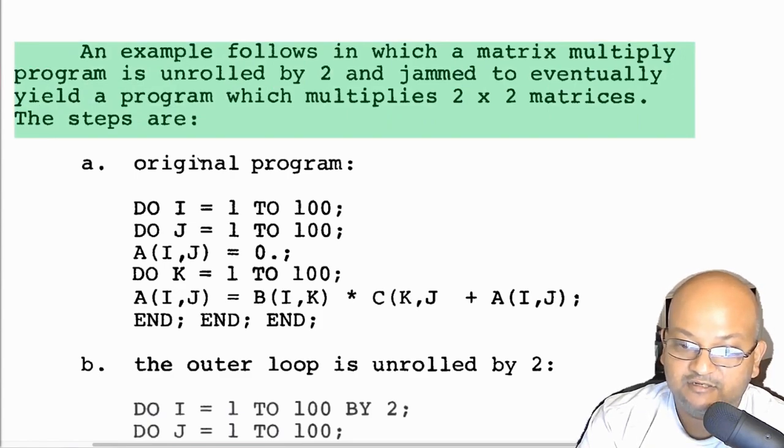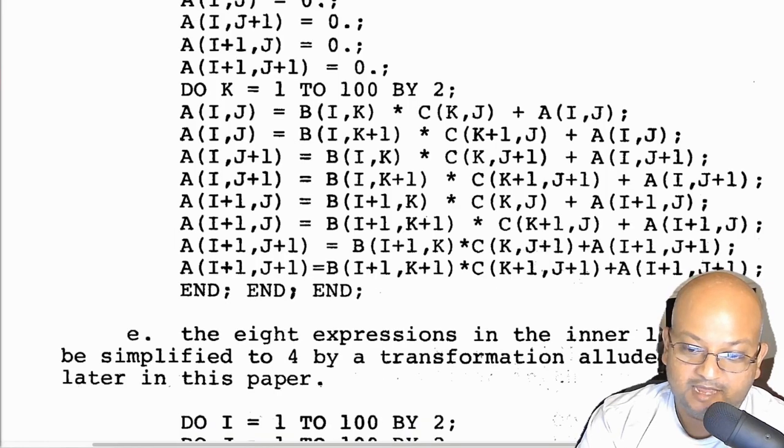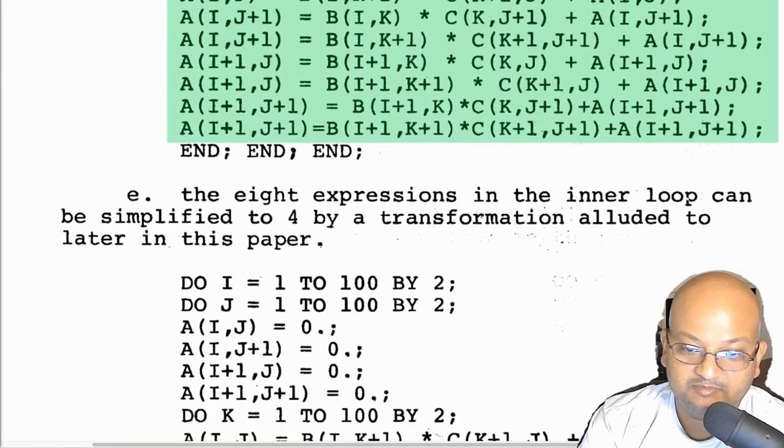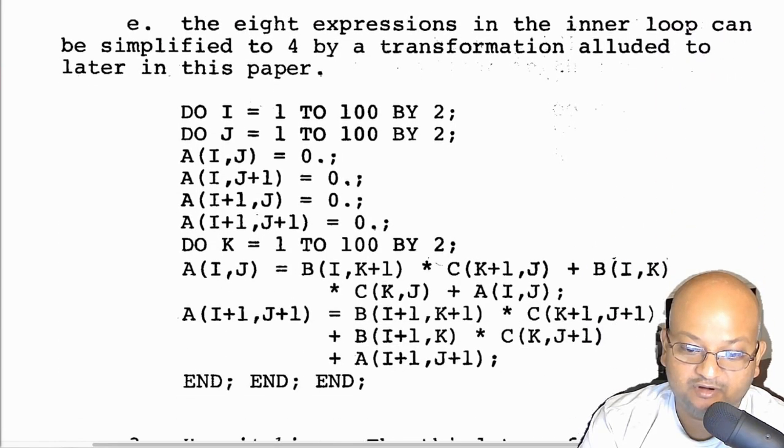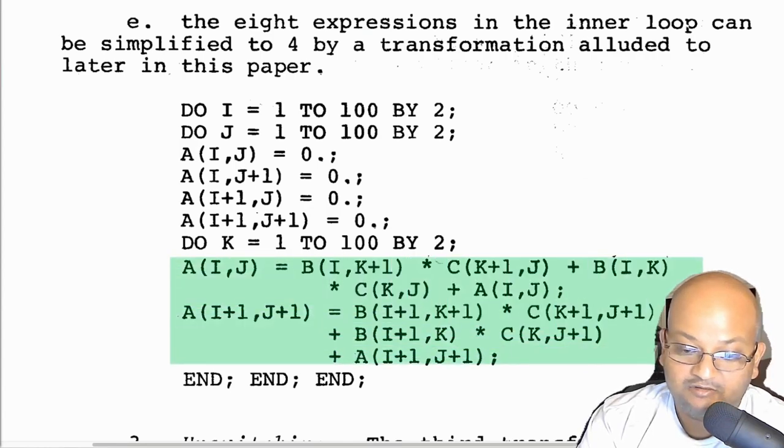They have an interesting example here in which these two optimizations are applied together. They have a matrix multiply program, and what they do is unroll it by two and then do loop fusion. And what that ends up with is a program which multiplies two by two matrices in its inner body. And the inner body of the loop ends up looking like this, which looks pretty complex. But when you simplify this large body of code, you actually end up with a much simpler expression. So this is a great example of how when you have a larger body of code to optimize, you can then try to simplify it into something much shorter and much simpler.